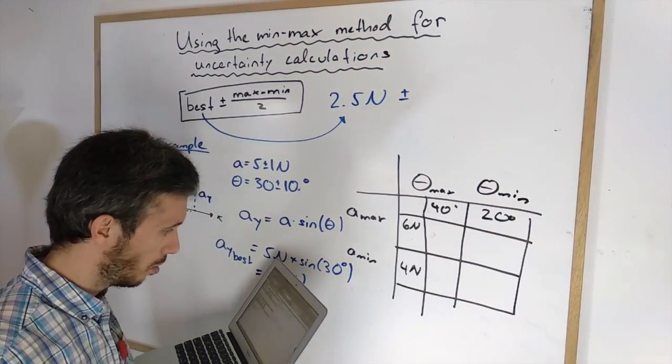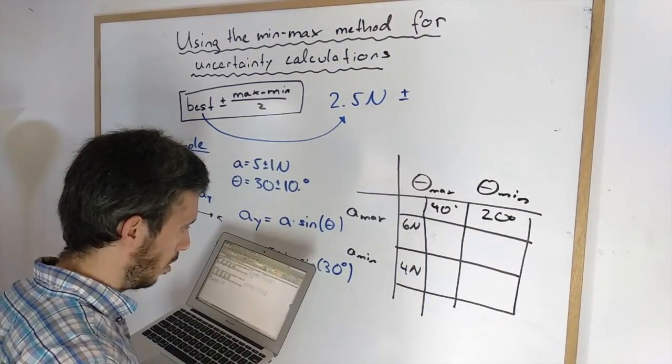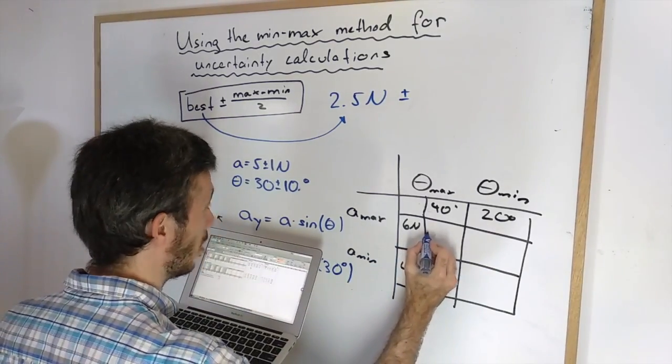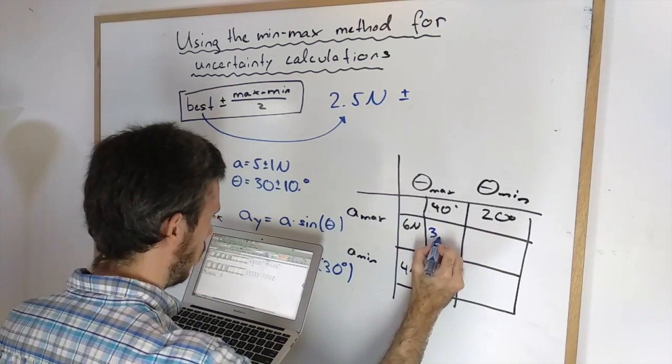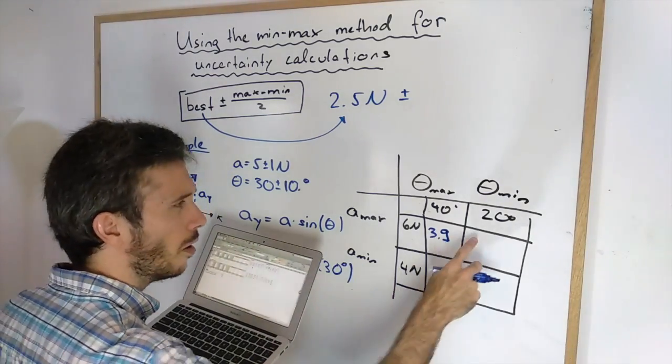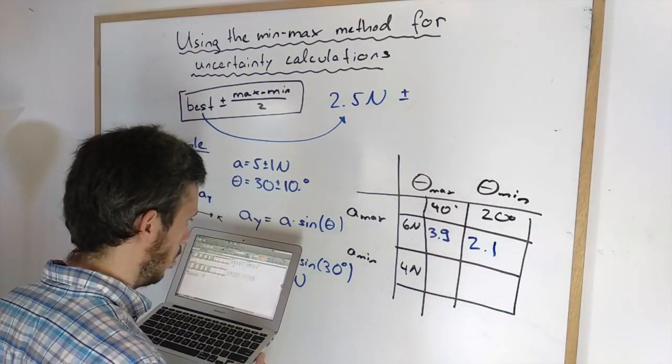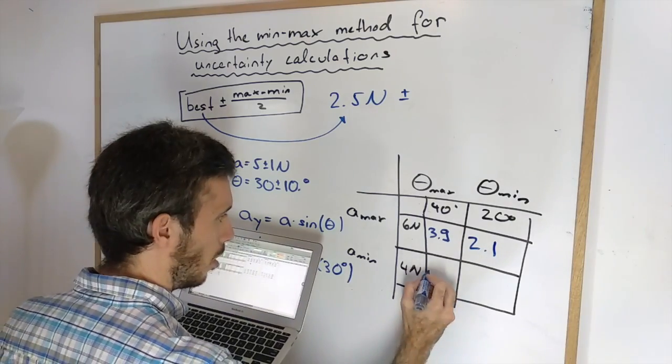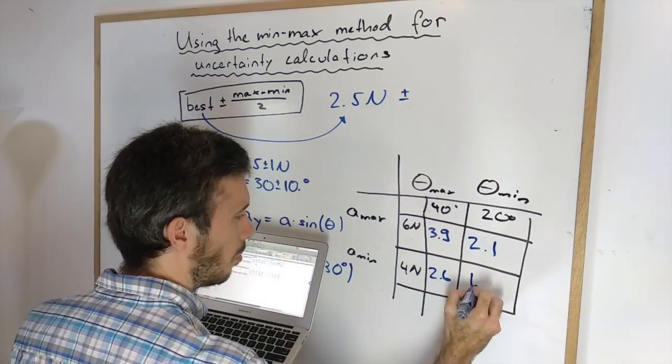For some reason I'm doing this with Excel. So I had for 6 newtons a maximum possible outcome of 3.9. And for my smallest angle I had 2.1. For this one here I got 2.6 and over here 1.4.